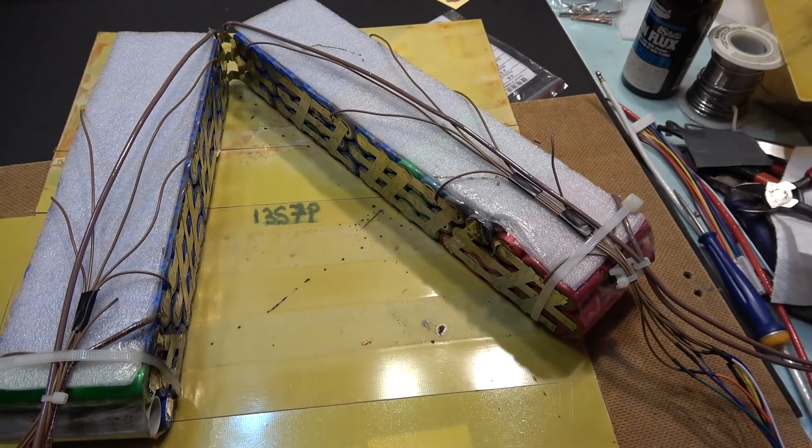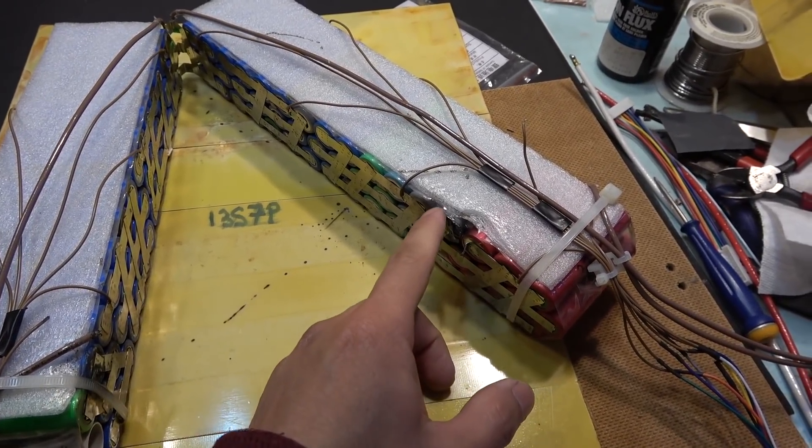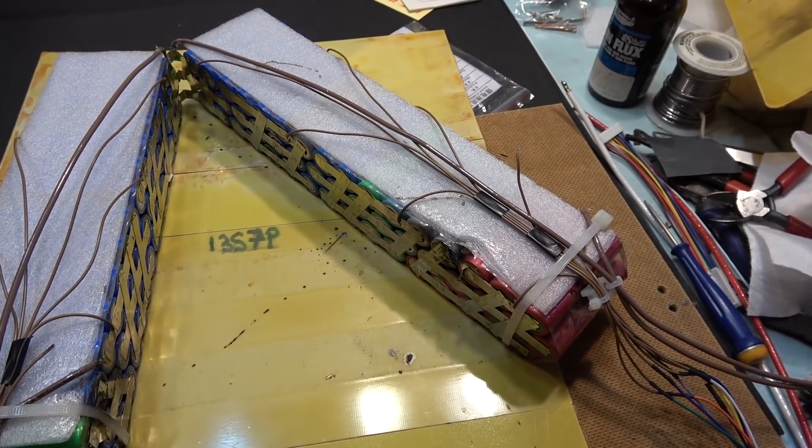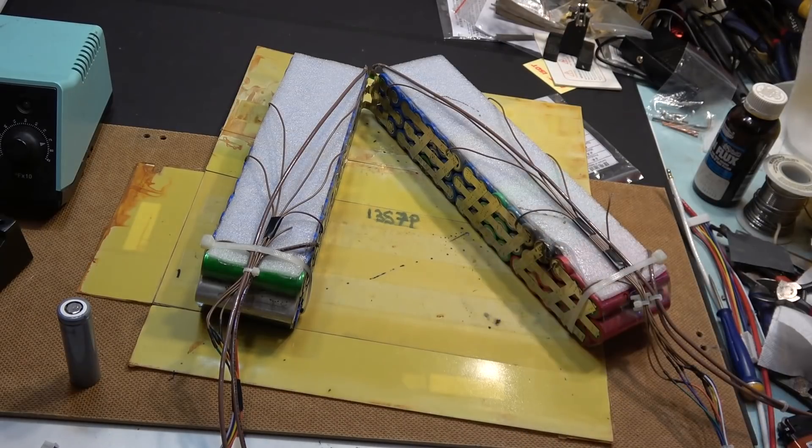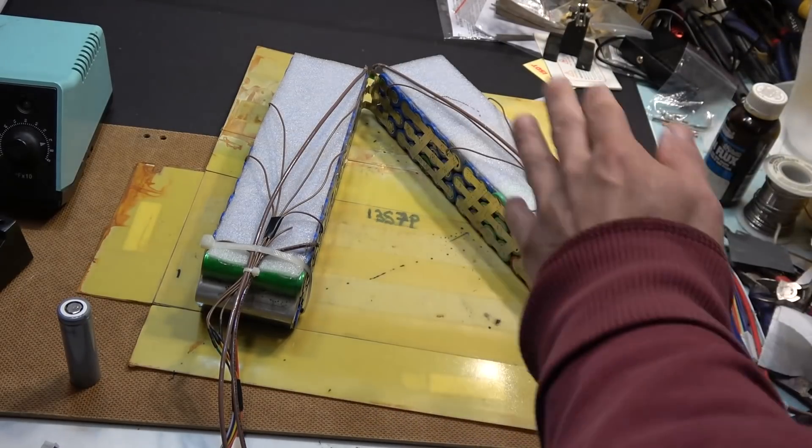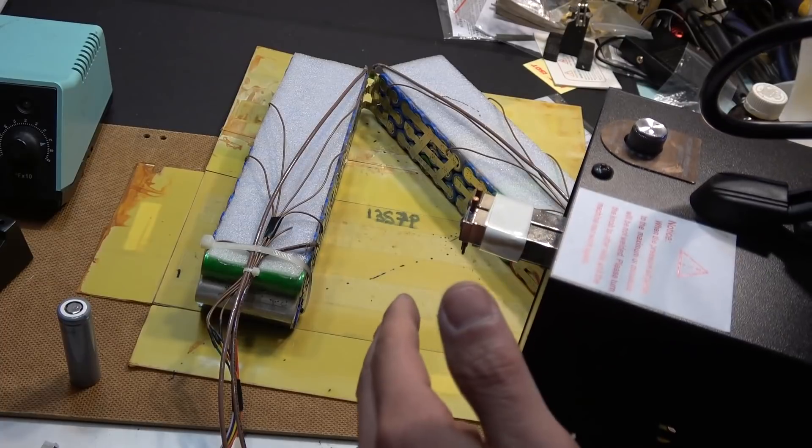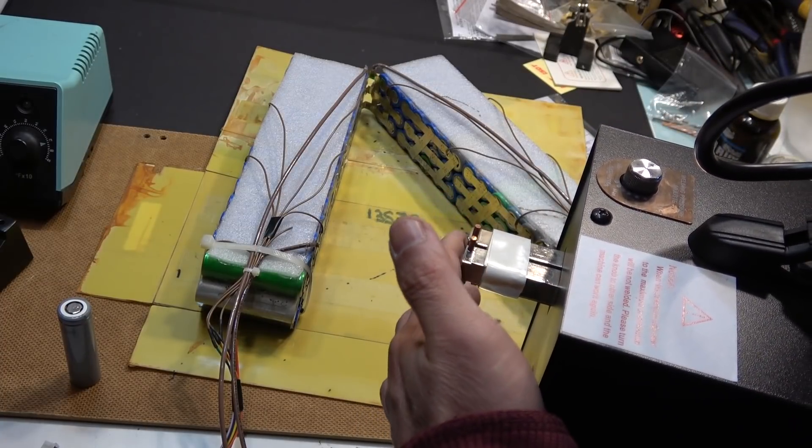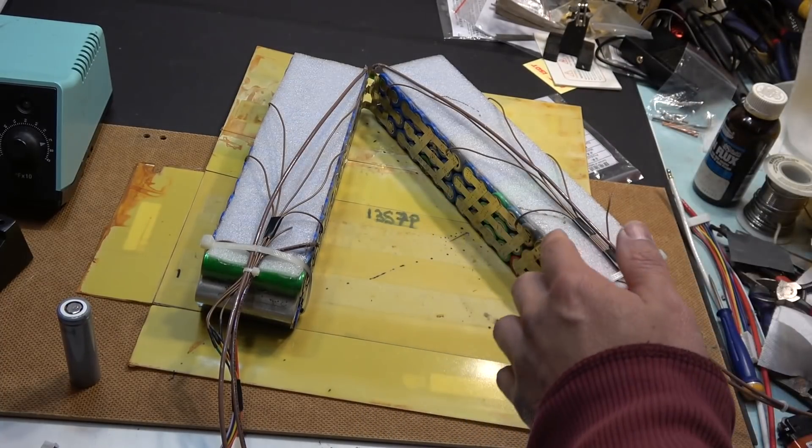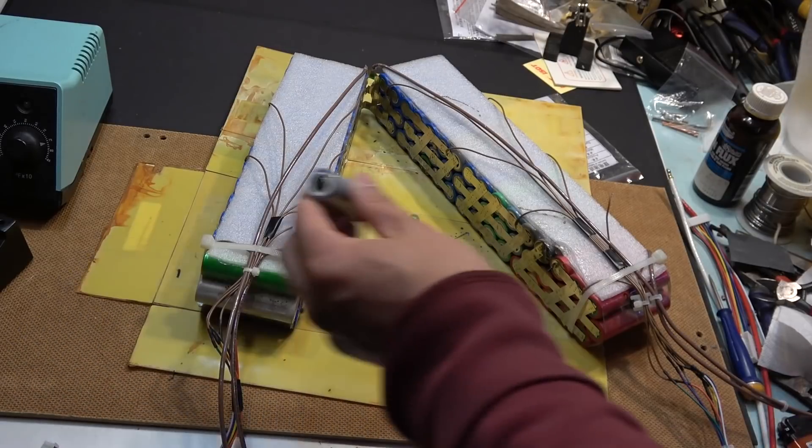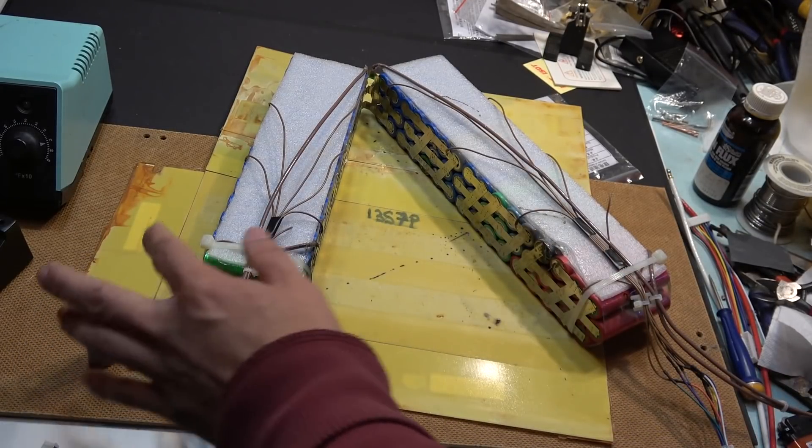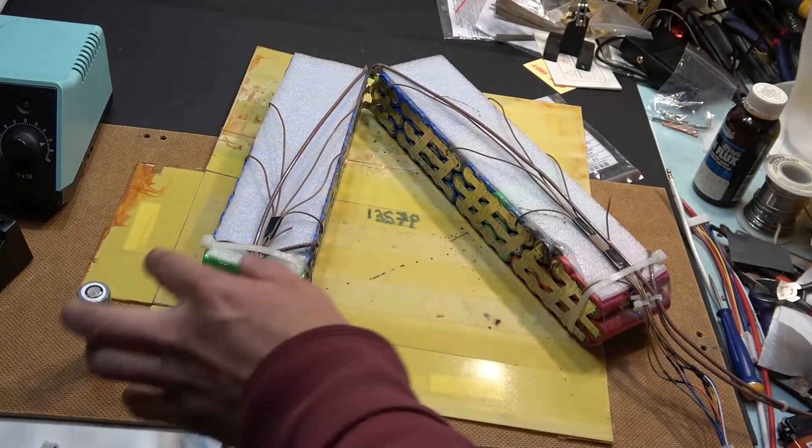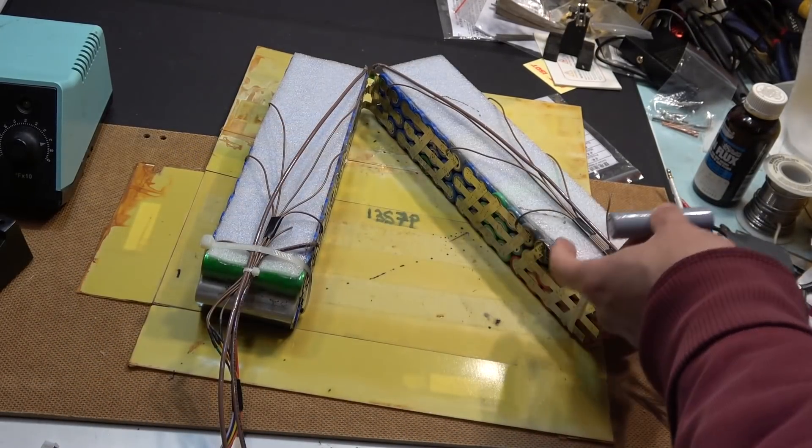So in this video I'm going to remove this cell out of this pack and then put in a new cell. When I first made this battery pack I used a spot welder to connect all the cells together, but this spot welder doesn't have a removable electrode. So it's going to be really hard for me to weld a new cell in here. So I think I'm going to use my soldering iron to solder a new cell in here.